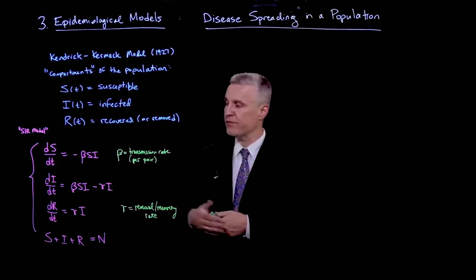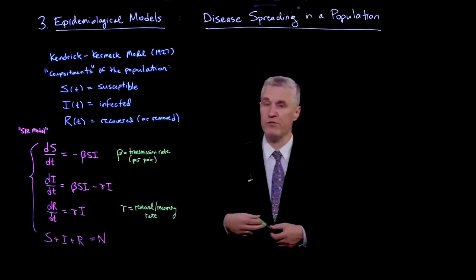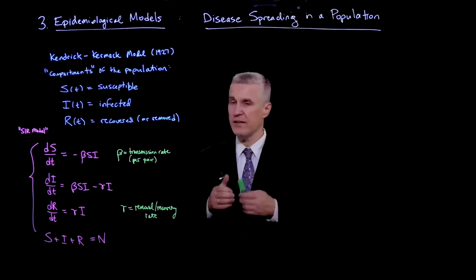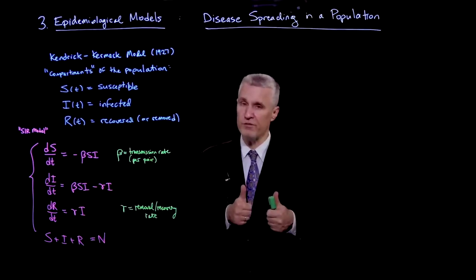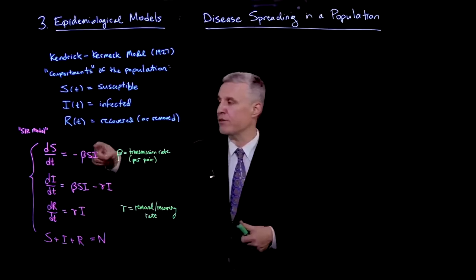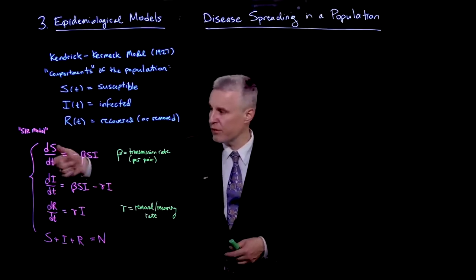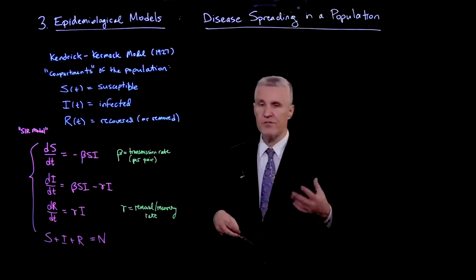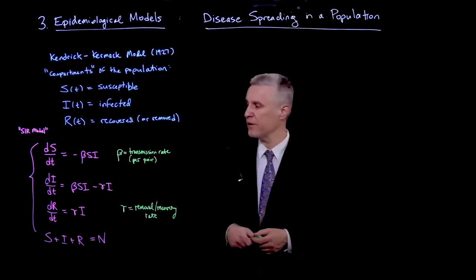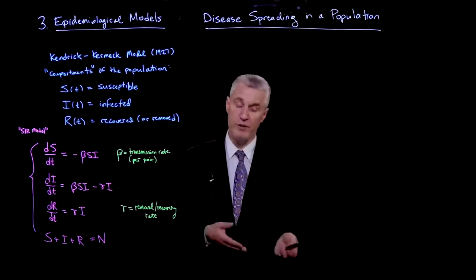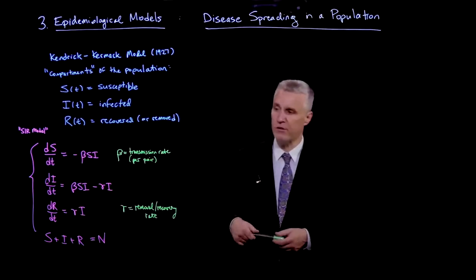In the simplest SIR model, there are two rate parameters. One is beta, the transmission rate — the rate at which infection is passed between a pair of people, one of whom is infected and the other susceptible. The reaction rate is beta*S*I, and when that reaction occurs, S decreases and I increases. The second process is recovery or removal, accomplished at a rate gamma. When an individual is removed by recovery or death, they are removed at rate gamma*I and added to the recovered pool.